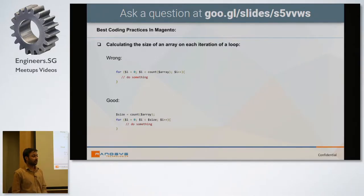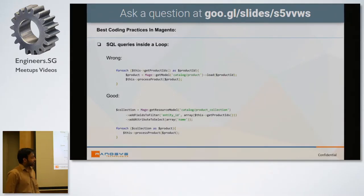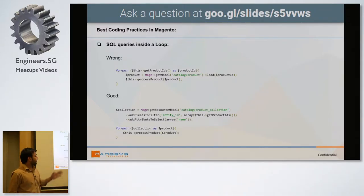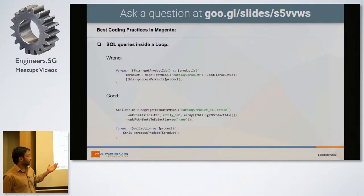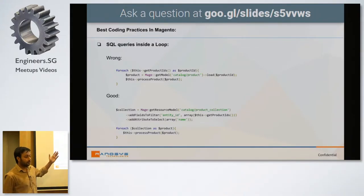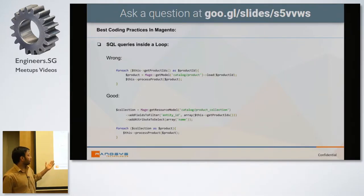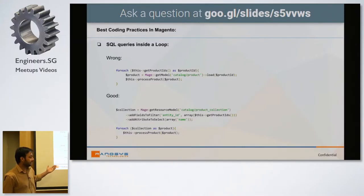The second issue is SQL queries inside a loop. In Magento, we load models to get data — for example, to get product data we load a model which hits the database. If we have multiple IDs in a foreach loop and call the model on each iteration, we are hitting the database repeatedly. Instead, we should load the collection outside the loop, passing all the IDs at once, and then iterate over it.